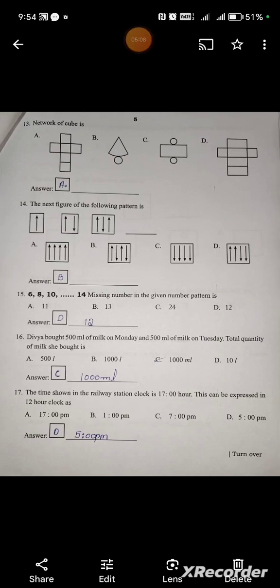Network of the cube is option A. The next figure of the following pattern is one arrow, one up arrow, and up and down arrow. Compare the pattern, the option will be D.